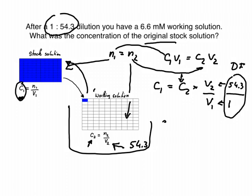So c1 equals 6.6 millimolar times our dilution factor, and we have to do it this way around because we know that our stock solution needs to be much larger than the working solution, so we couldn't do it the other way around. So it would be 54.3 over 1, and if we put that in a calculator...